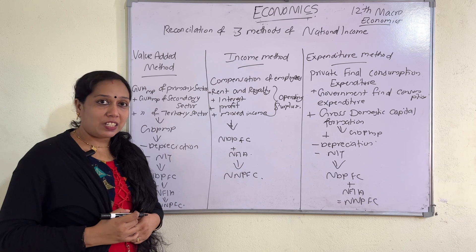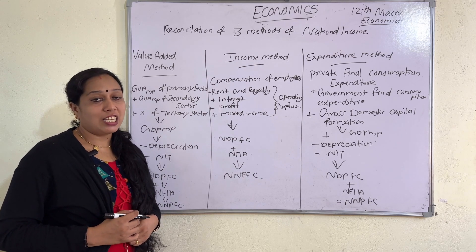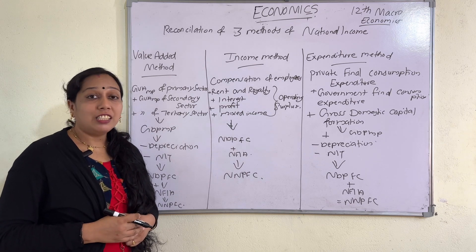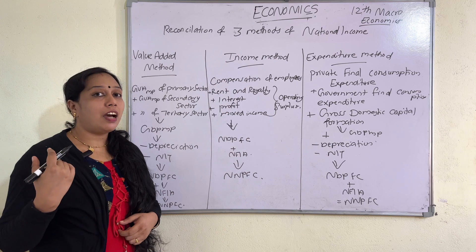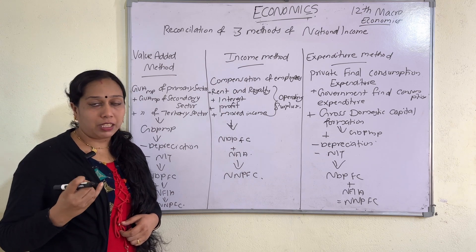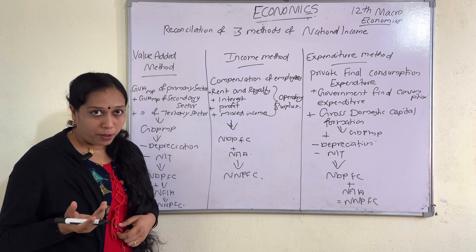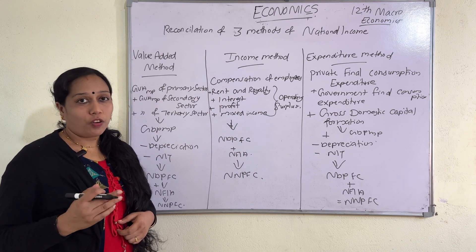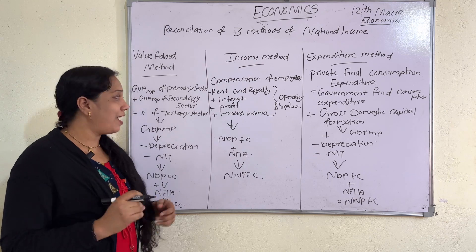This is also a sure exam question. Now we will study the reconciliation of the three methods of national income — the income method, expenditure method, and value-added method. This is a sure 6-mark question in 12th macroeconomics. Either they ask you to write the formula or they give problems related to each method. You have to study the formula — it is very important.